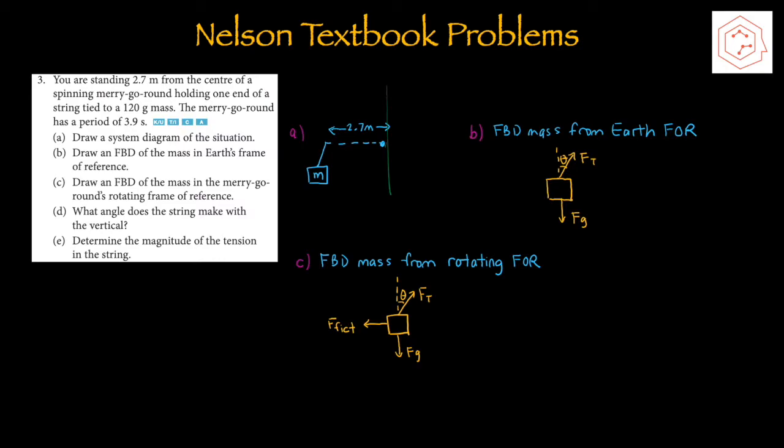Question 3: You're standing 2.7 m from the center of a spinning merry-go-round, holding one end of a string tied to a 128-gram mass. The merry-go-round has a period of 3.9 seconds. Part A: draw a system diagram. A system diagram includes all elements — the pole at the center, you standing 2.7 m from the center holding one end of the string, and the mass hanging on the other end.